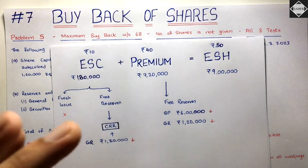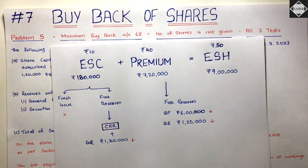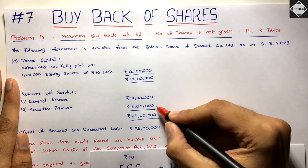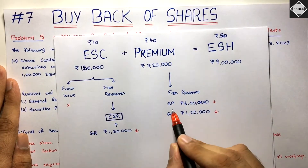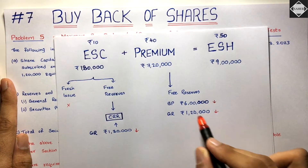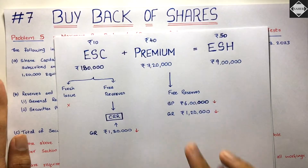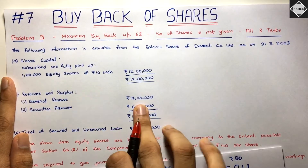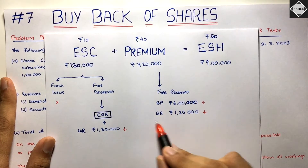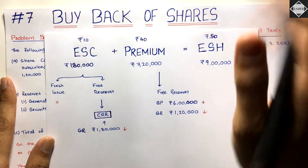The premium on buyback of ₹7,20,000 must be written off using securities premium first (priority), then free reserves. Securities premium is ₹6 lakhs - utilized completely. Remaining ₹1,20,000 (₹7,20,000 - ₹6,00,000) comes from general reserve. So general reserve decreases by ₹1,20,000 to write off the premium on buyback.